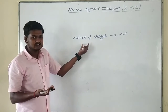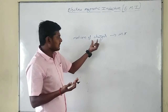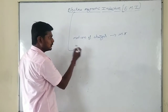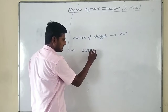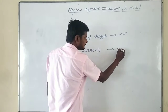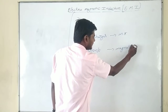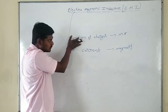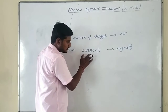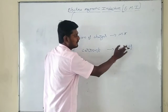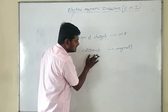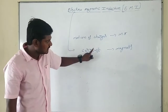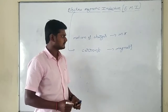In the fifth chapter, magnetism and matter, we discussed magnetic elements and their properties. Now in this chapter — electromagnetic induction — we are going to do the vice versa: we are going to produce electrical current from a magnet. In the previous chapters we produced a magnetic field from charges; now we are going to produce current from magnets. That is what we are going to discuss in this chapter.